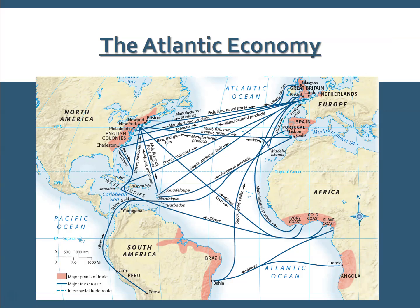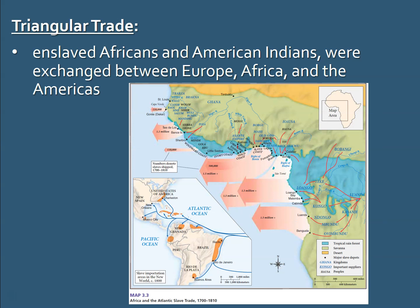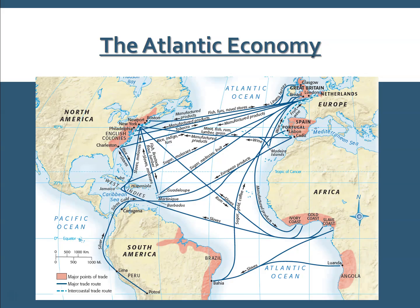Looking at the Atlantic Ocean, we can see Europe, Africa, South America, and North America all connected. This is better known as the Triangular Trade Route or Triangle Trade. It's not literally a triangle, but Europe, Africa, and the Americas are the three points. You're connecting three of them basically in one trip.